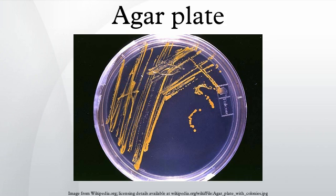Sabouraud agar is used to culture fungi and has a low pH that inhibits the growth of most bacteria. It also contains the antibiotic gentamicin to specifically inhibit the growth of Gram-negative bacteria. Hay infusion agar is specific for the culturing of slime molds. Potato dextrose agar is used to culture certain types of fungi. Malt extract agar has a high content of peptone and is acidic, and is essentially used in the isolation of fungal microorganisms.